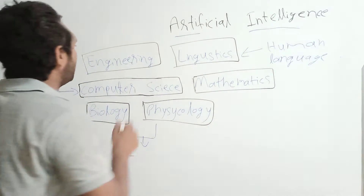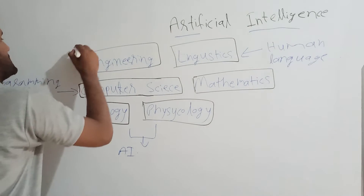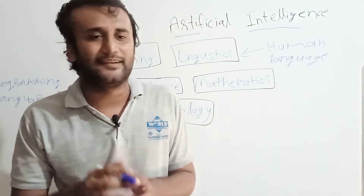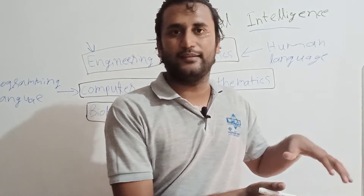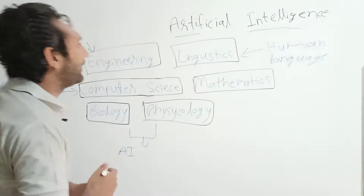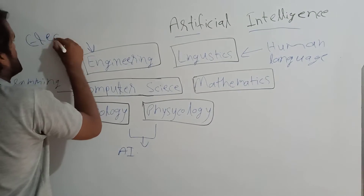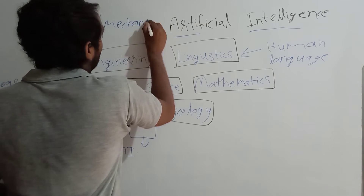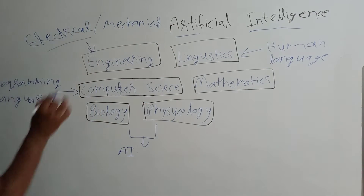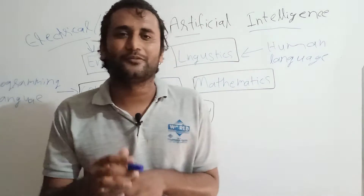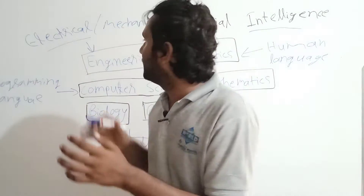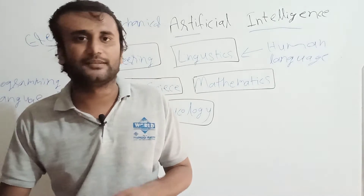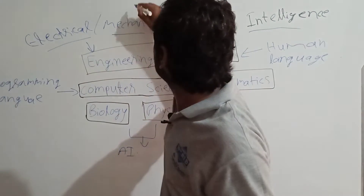Now the aspects of engineering and electronics. Whenever we are creating artificial intelligence, we use aspects of engineering — such as electrical engineering and mechanical engineering. Electrical engineering is used to design and program circuits for our robots. Robots that use artificial intelligence also rely on mechanical engineering.